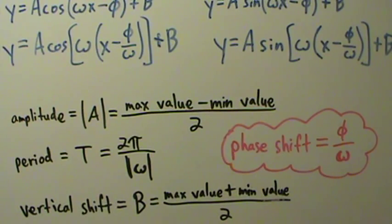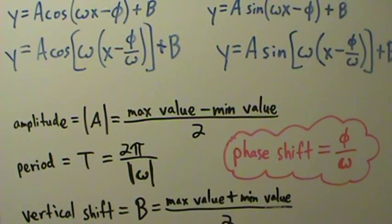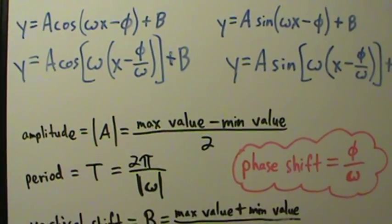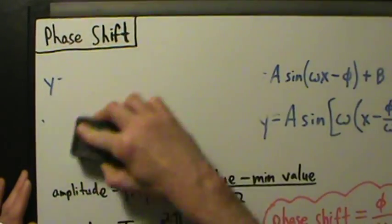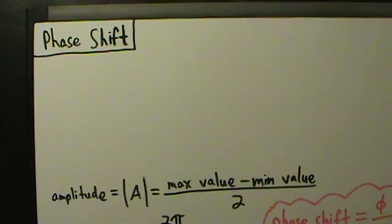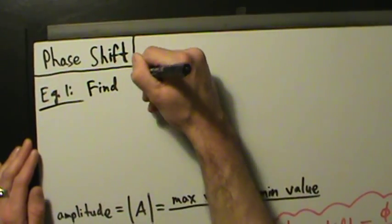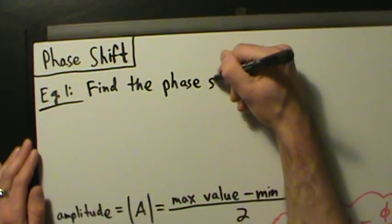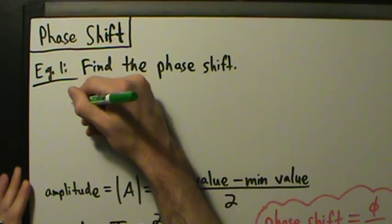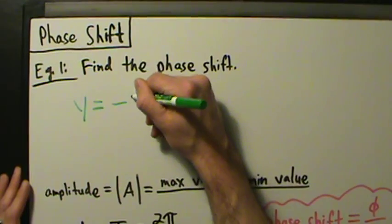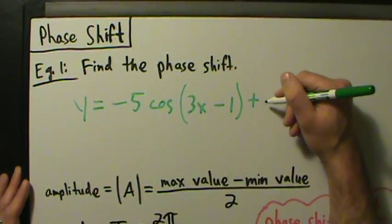Let's do a quick example. In the next video, example two will illustrate what happens when omega is negative and why we don't take the absolute value there. For now, example one: find the phase shift.